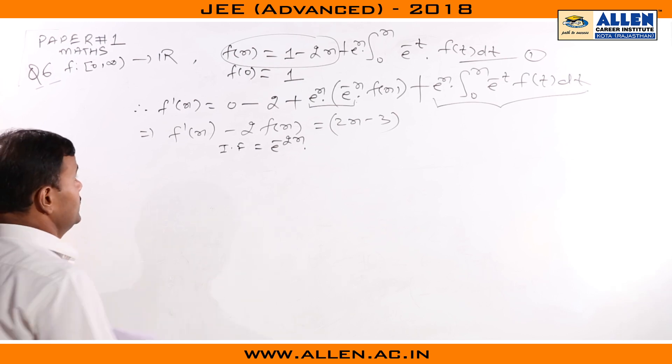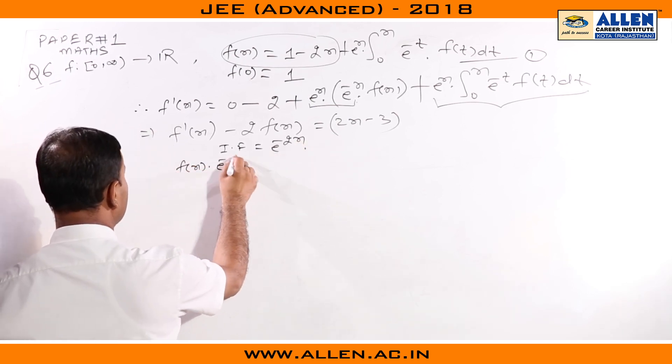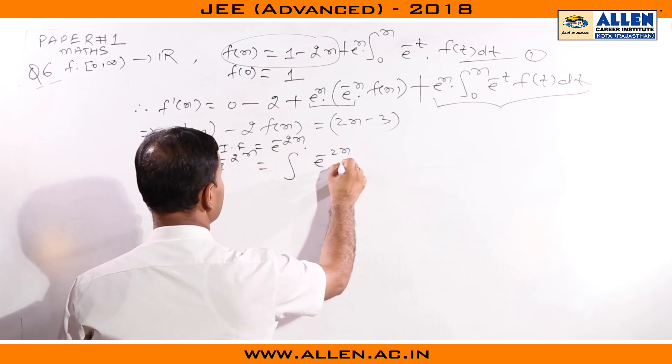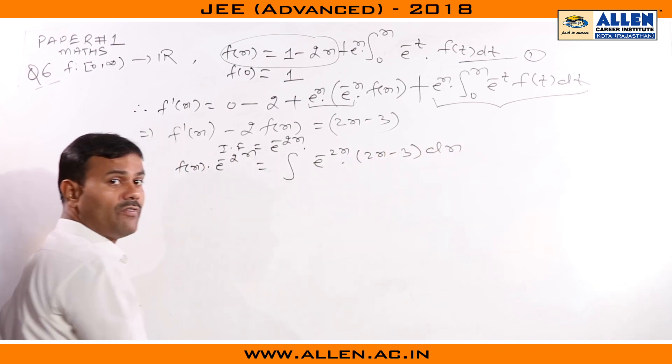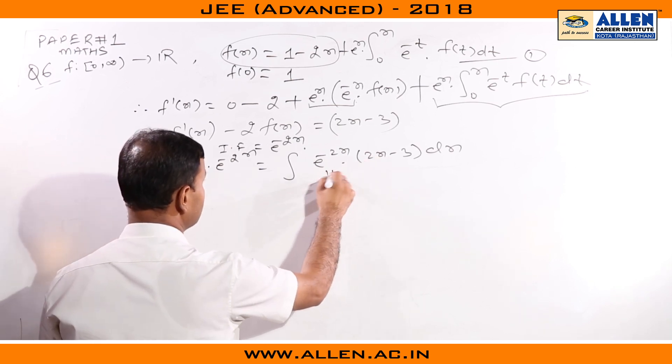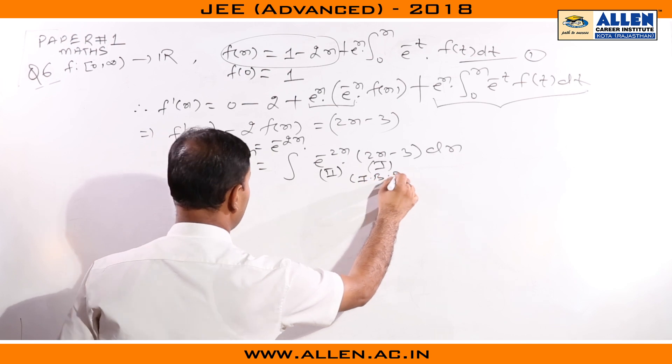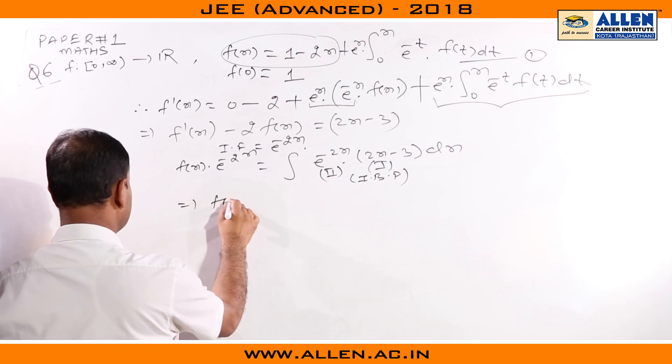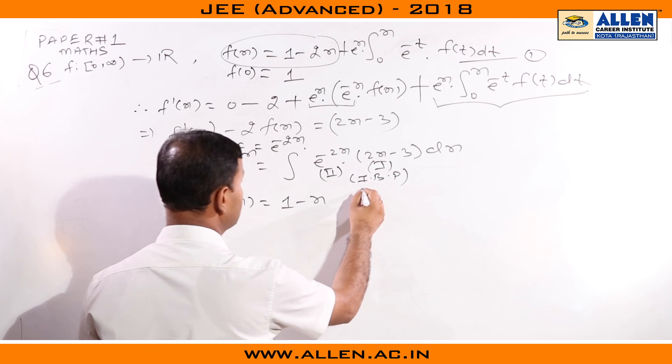So we write the general solution: f(x) multiplied by this integrating factor equals the integral. To evaluate this integral, we apply integration by parts. This will be the second function, this will be the first function.